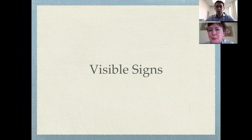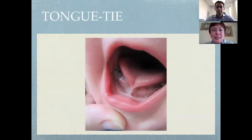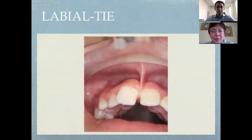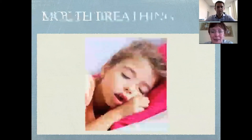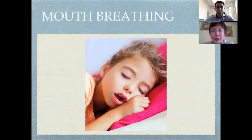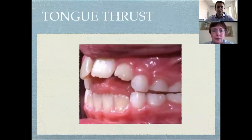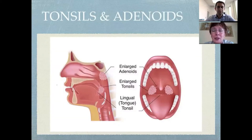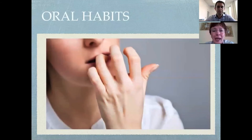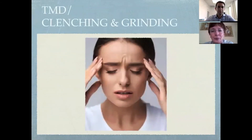Sanda, why don't you walk us through some visible signs of these issues? Yes — tongue tie, labial tie, mouth breathing during the day and night, tongue thrust, tonsils and adenoids, oral habits like nail biting, and TMD clenching and grinding.